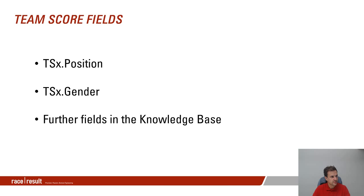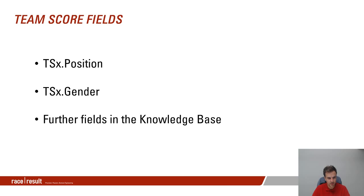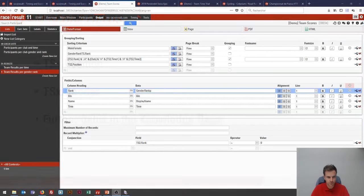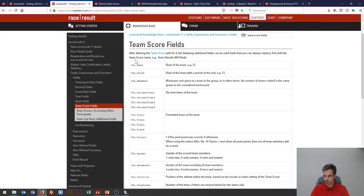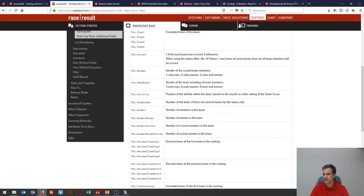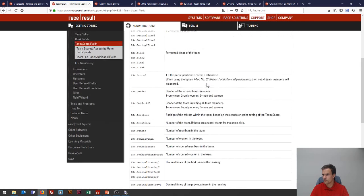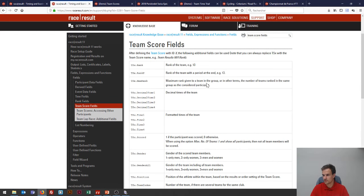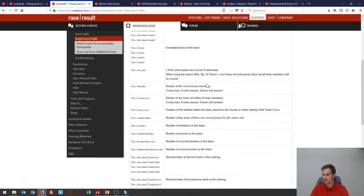For proper team events, you'll probably need to use some team score fields such as the team score position, the team score gender, and possibly further fields, all documented in our knowledge base. If you look up 'team score fields' in the knowledge base, you'll find a table giving you all the possible fields you can use for a given team score.